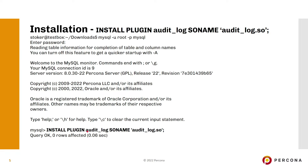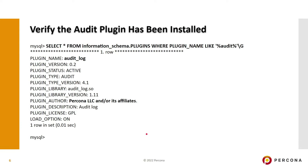To install the plugin, use the INSTALL PLUGIN command. The name of the plugin is audit_log and the shared object name is audit_log.so. To verify it's installed properly, query the information_schema plugins table using a wildcard for 'audit' and you should see the plugin name audit_log from Percona LLC and/or its affiliates.